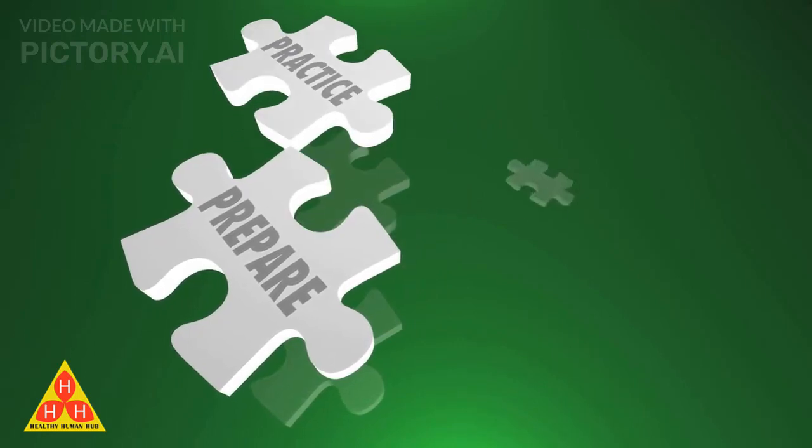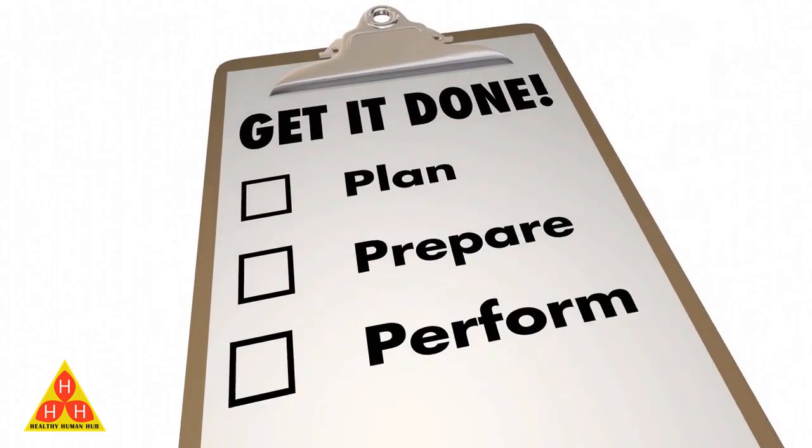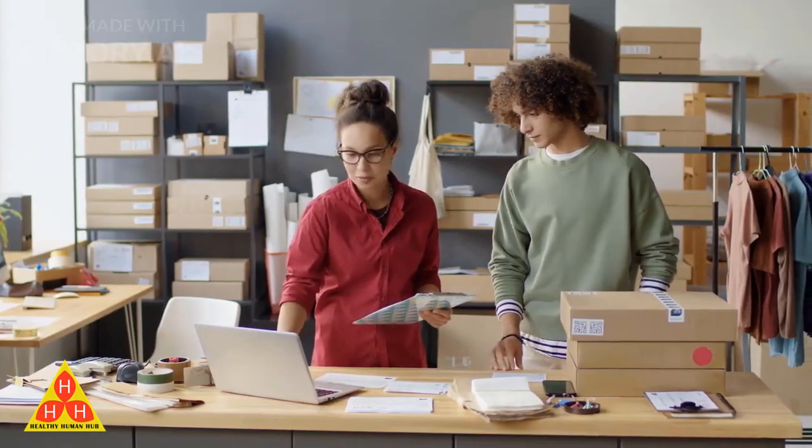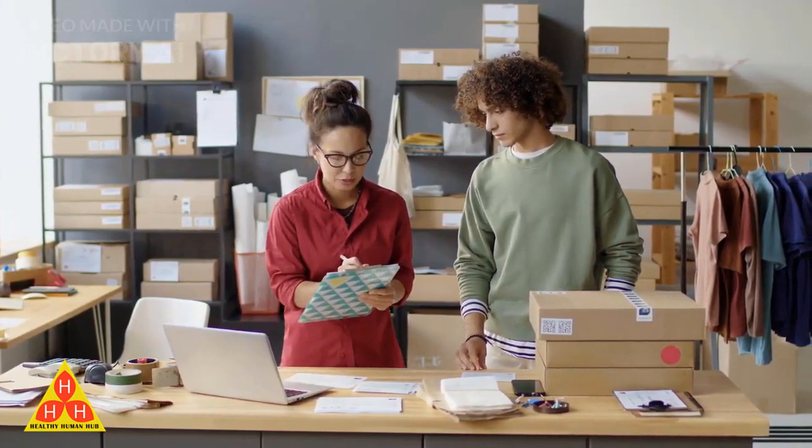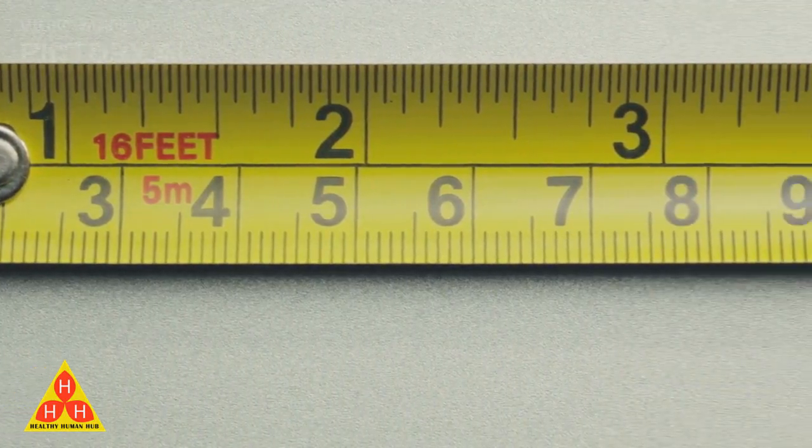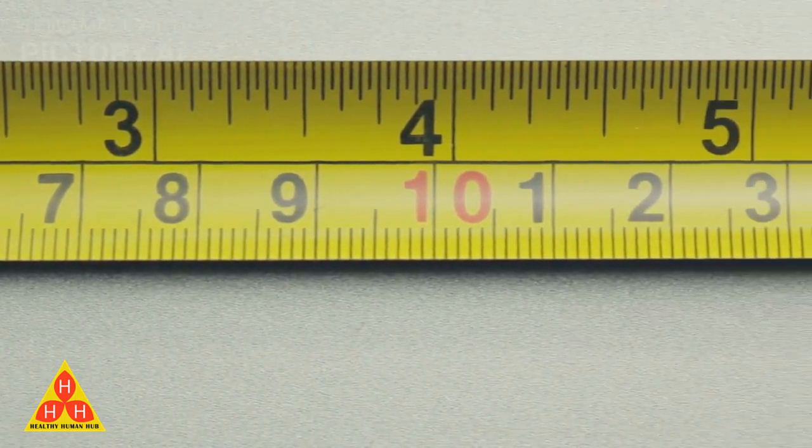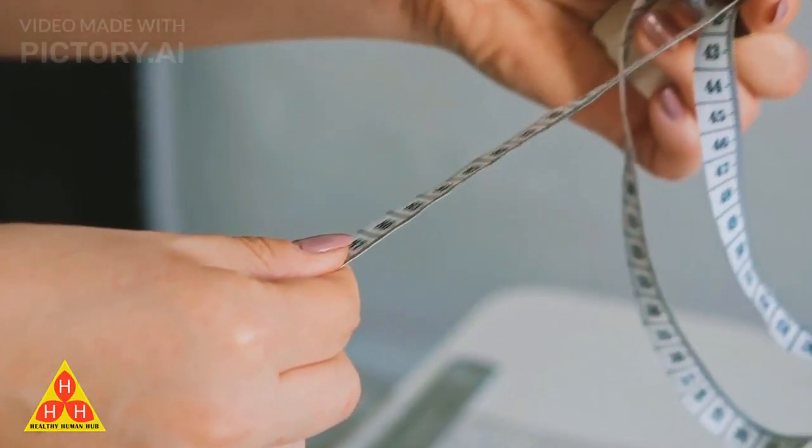A pregnancy calculator is an online tool that helps you estimate your due date. It uses the first day of your last menstrual period to calculate the expected date of delivery. The calculator takes into account the average length of your menstrual cycle and the date of conception to provide you with an estimated due date. It is important to note that the calculator provides an estimated due date and the actual delivery date may vary.